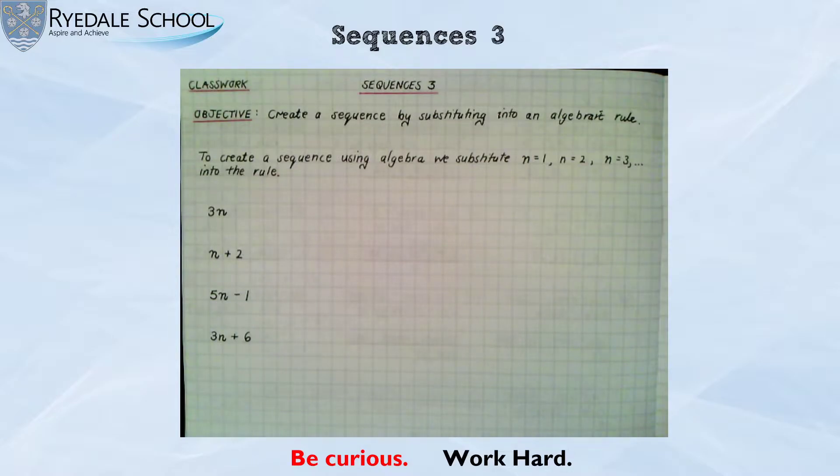The algebraic rule normally uses the letter n and is sometimes called the nth term. Now one of the benefits of using algebra to create a rule is that you can work out some of the numbers in the sequence quite easily.